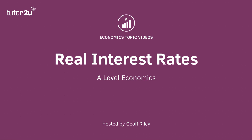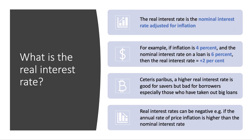Welcome to a short macro video looking at the concept of real interest rates. The real interest rate is the nominal or money rate of interest on loans or savings adjusted for the rate of inflation. Quick example: if inflation is running at four percent and the nominal interest rate on a loan is six percent, then the real interest rate is six minus four, which equals plus two percent. We would say that real interest rates on that loan were positive — the lender will get a positive real return providing that loan is repaid.